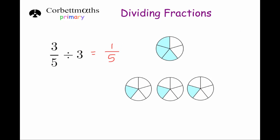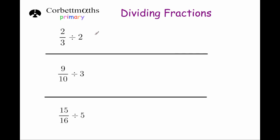Let's have a look at some similar questions. So 2 thirds divided by 2: if we divided 2 thirds equally into 2, that would be 1 third. And again, 2 divided by 2 is 1, so it's just 1 third. Next, 9 tenths divided by 3: if we share 9 tenths equally between 3, they would get 3 tenths each — 9 divided by 3 is 3, and we keep the denominator the same. Finally, 15 sixteenths divided by 5: 15 sixteenths shared equally between 5 gives 3 sixteenths each, since 15 divided by 5 is 3.